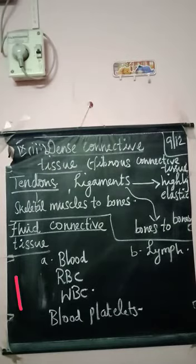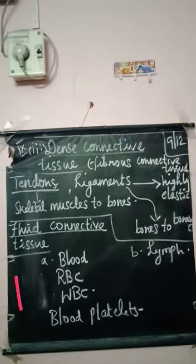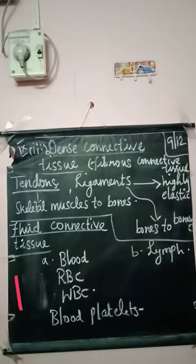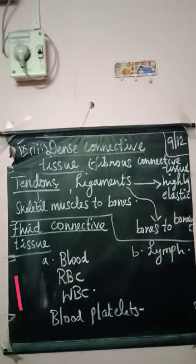Dense connective tissue is a fibrous connective tissue tightly packed with fibers and fibroblasts. These fibers and fibroblasts are the principal components of tendons and ligaments. Both are strong structures. Tendons join skeletal muscles to bones, while ligaments have a highly elastic nature and join bones to bones, strengthening the joints and allowing normal body movement. The next one is fluid connective tissue.